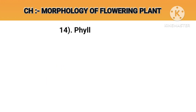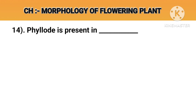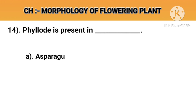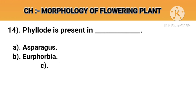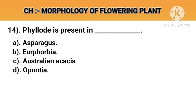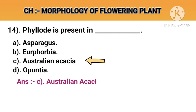Question number 14. Phyllode is present in. Option A: Asparagus. Option B: Euphorbia. Option C: Australian acacia. Option D: Opuntia. Answer C: Australian acacia.